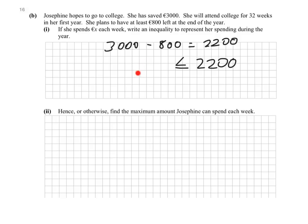Now, how do we figure out what goes on the left-hand side? Well, we know she has 32 weeks in college and she spends x euros each week. So how would we work out the total amount that she spends? It would be simply 32 times x. So 32x represents what she spends during the year, and that must be less than or equal to 2,200 as we've already established. So this is what they mean in the question, write an inequality to represent her spending during the year. This is her spending during the year, and it has to be less than or equal to 2,200.